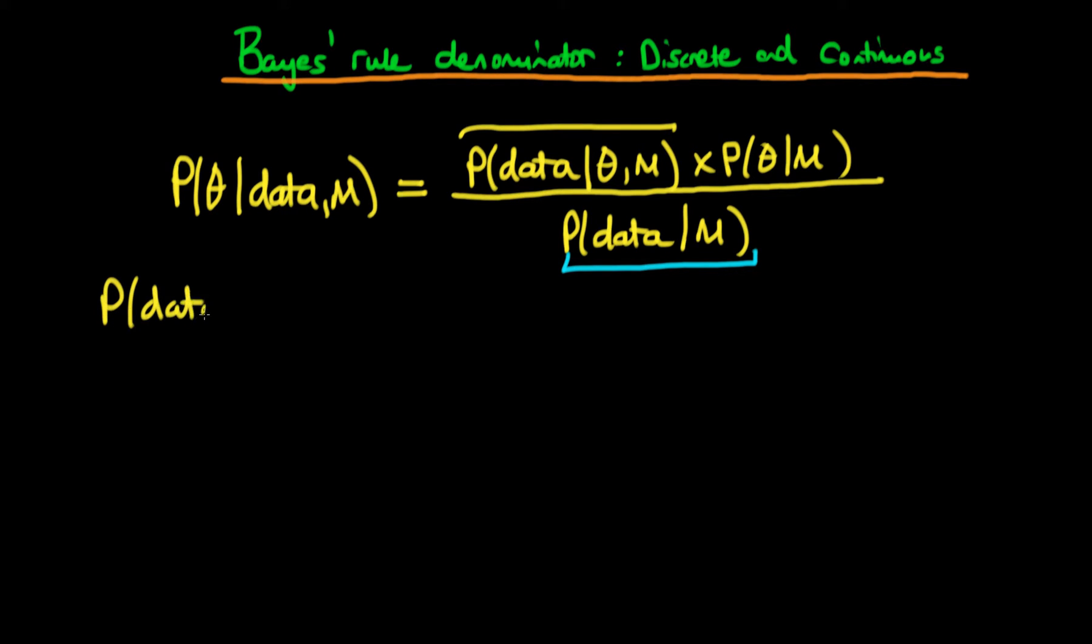we've got the probability of data given a particular value of theta and given a choice of model. And we're comparing this with the probability of data, and now we're solely conditioning on model choice. So when we write it like this, we see that essentially what we've done is we've removed this theta dependence for the denominator.